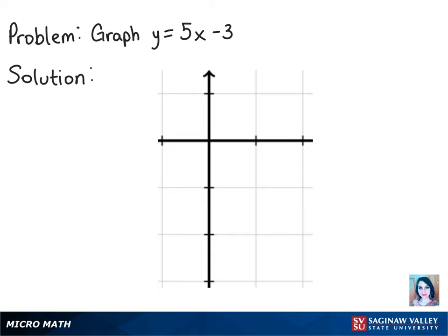One thing we can do to graph the line y equals 5x minus 3 is figure out what the x and y-intercepts are, which are basically just the coordinates that fall on the x and y-axes. Once we graph those, we can just connect those points and have our line.